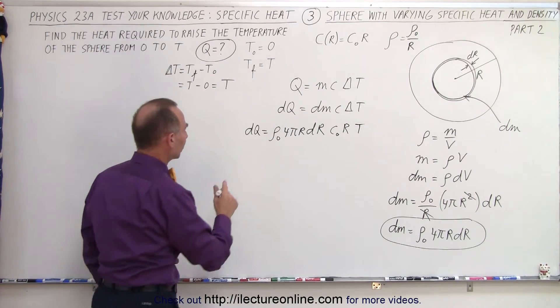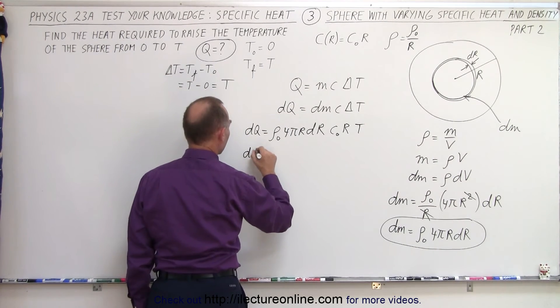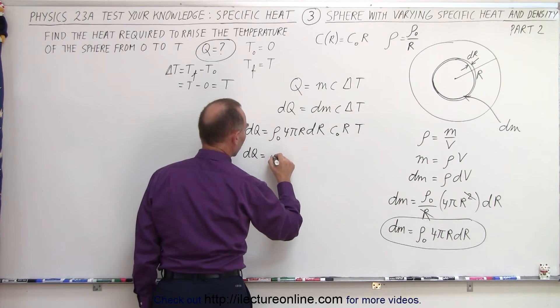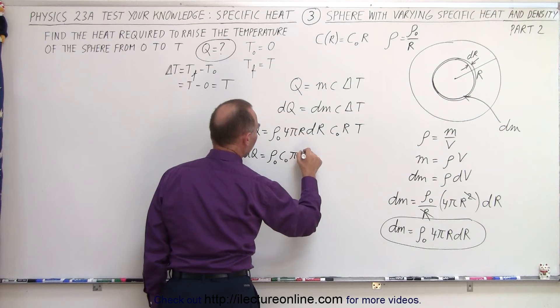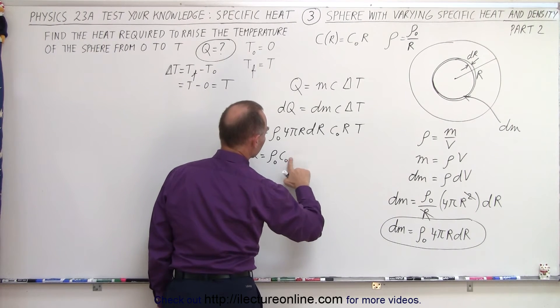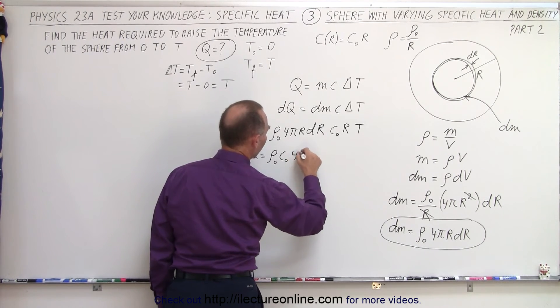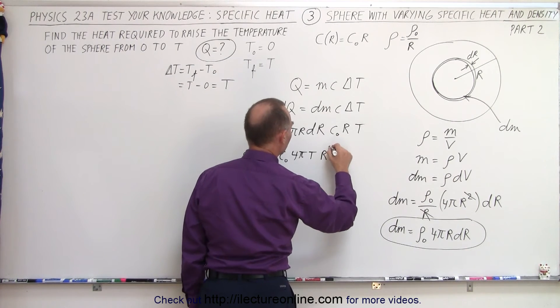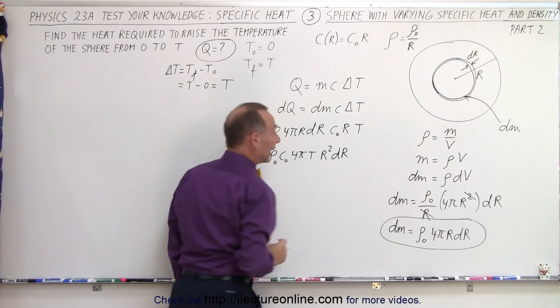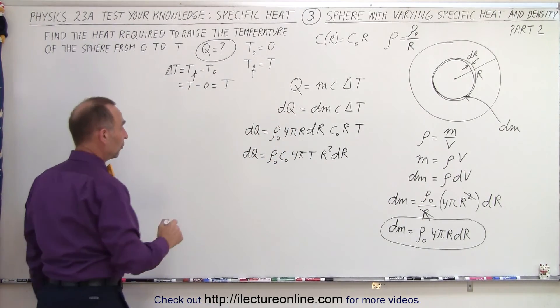Okay, consolidating some things, we can say that dQ is equal to density sub naught, C sub naught, 4 pi, oops, I missed my 4. 4 pi times T, and we have an r times r, which is now an r squared dr. And now we're ready to integrate. In other words, what we can say here is that the total Q is equal to the sum of all the dQs.